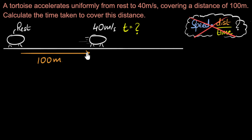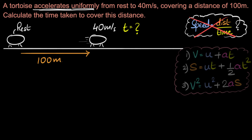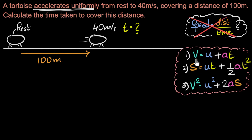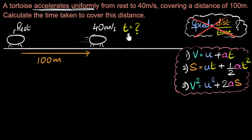So what do we do? Since the tortoise accelerates uniformly, the acceleration is constant. Whenever we have constant acceleration, we have three equations of motion, where V represents the final velocity, U is the initial velocity, A is the acceleration, T is the time, and S is the displacement. If you haven't seen these equations before, they've been derived and discussed in detail in previous videos. Now we think about which variables are given to us, and then which equation we can choose to find T.